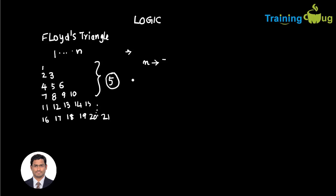After that we need to understand how we are going to print. We are printing a number from 1 to n. So I need a number variable which I initialize to 1, and then I need to keep on printing this number — I'll increment it using number++. How many times you want to print will be decided by the number of lines.